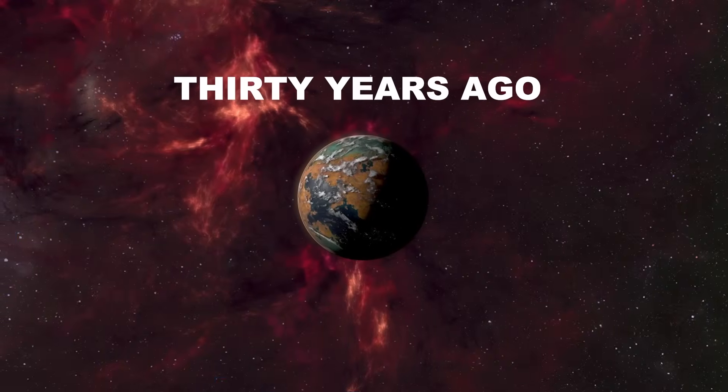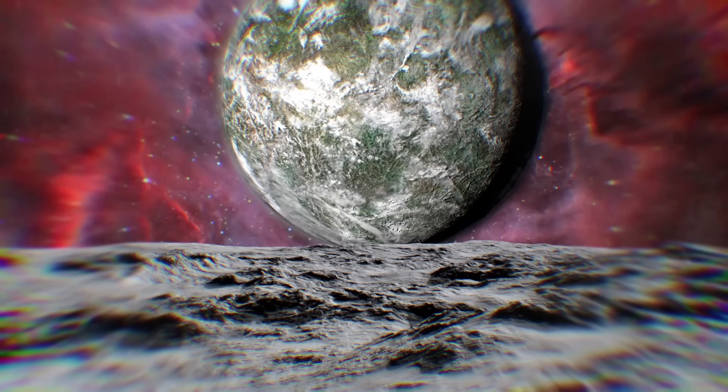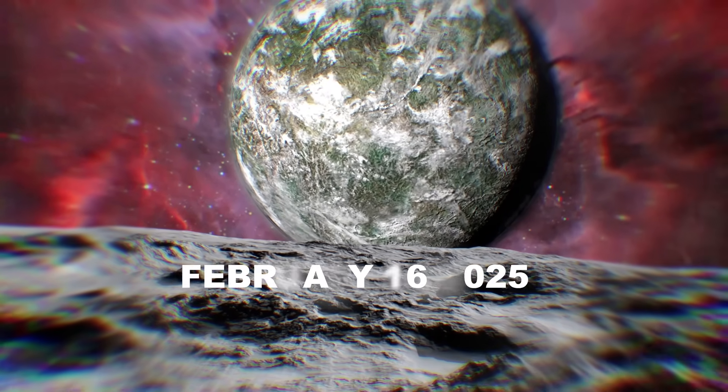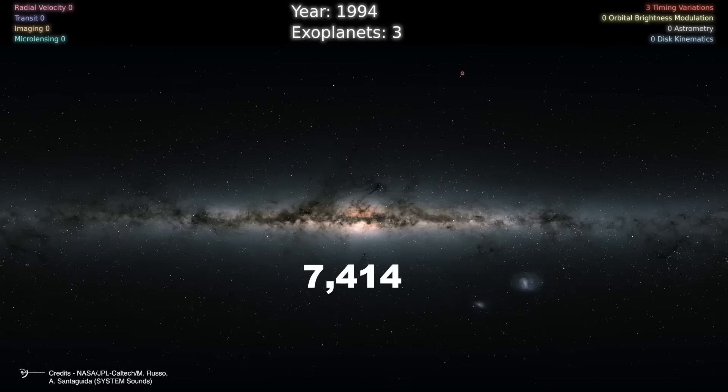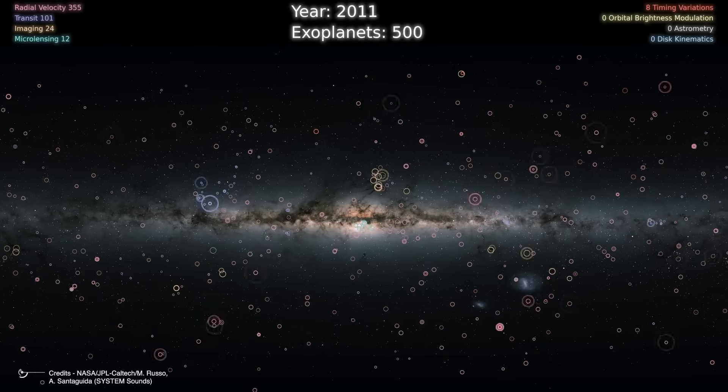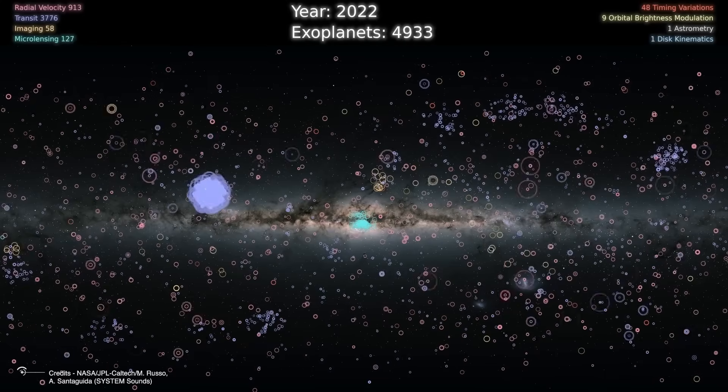30 years ago, we weren't even sure that planets existed outside our solar system. Today, according to statistics updated as of February 16, 2025, there are 7,414 confirmed extrasolar planets in 5,086 different systems, with 1,035 of these being multiple planet systems, plus many more hundreds waiting for confirmation.